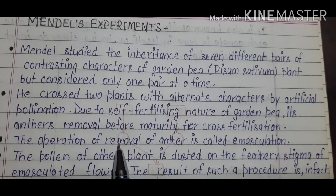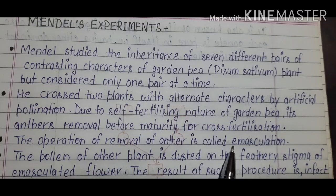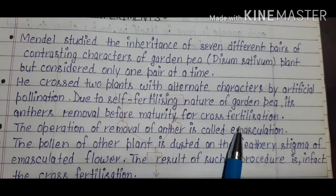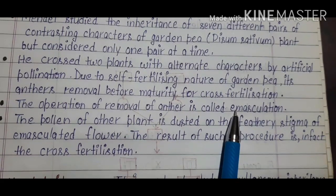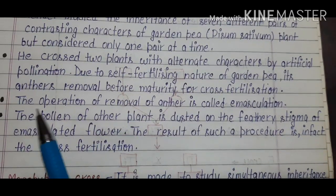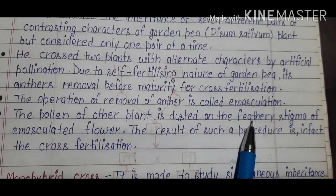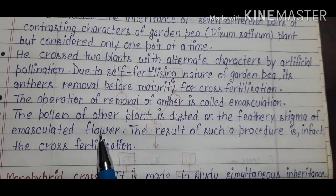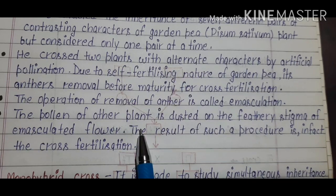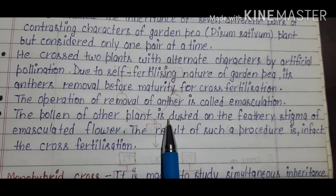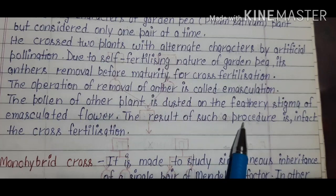The operation of removal of anthers is called emasculation. Through this process, anthers are removed before fertilization. The pollen of another plant is then dusted onto the stigma of the emasculated flower.